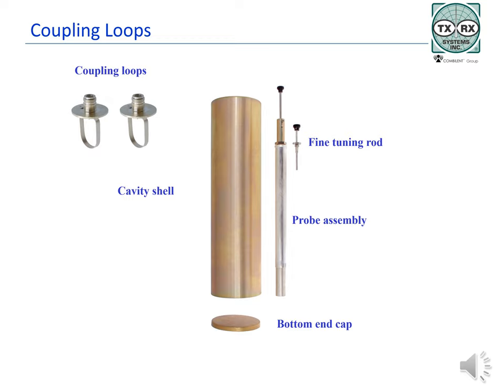The coupling loops shown are bandpass loops, allowing a certain range of frequencies to go through while blocking or attenuating others outside the pass band range. The loops in a cavity work like antennas, with one loop being the transmitter and the other the receiver, sending the signals through the cavity.